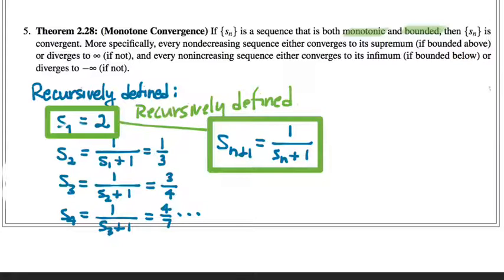Now, just looking at the first four terms of this sequence, we can see one of those two is not, in fact, satisfied. Which one? The sequence is not monotonic. From the first term to the second term, the value decreases. S2 is less than S1.